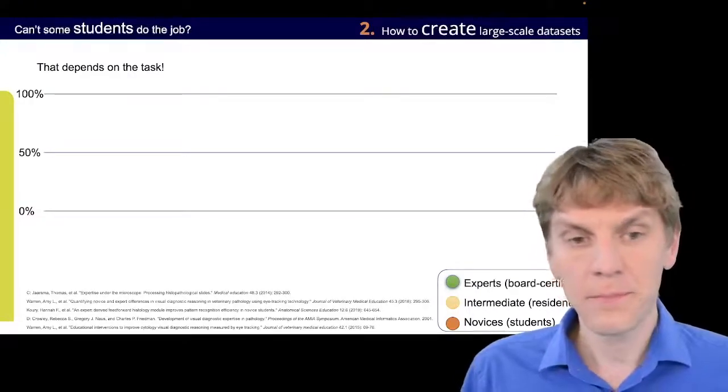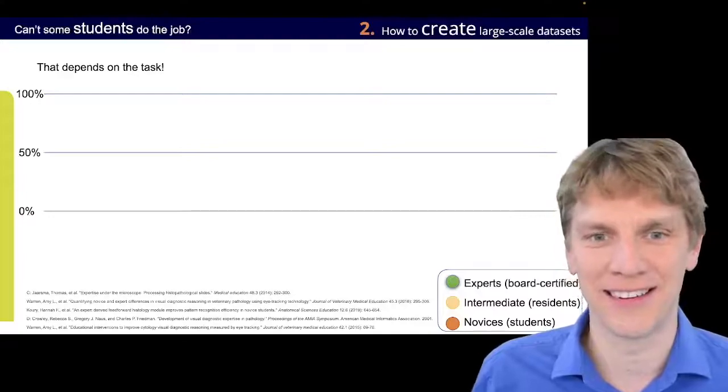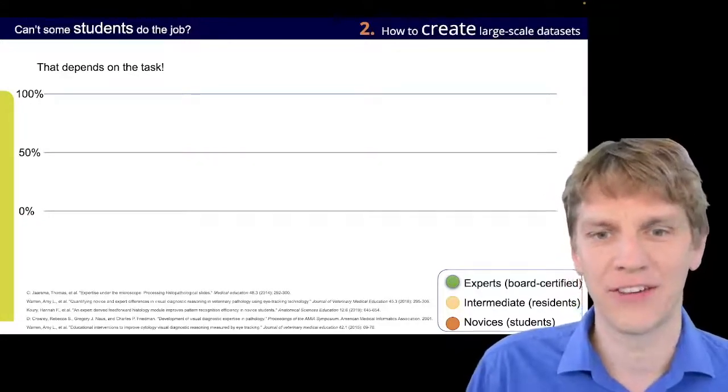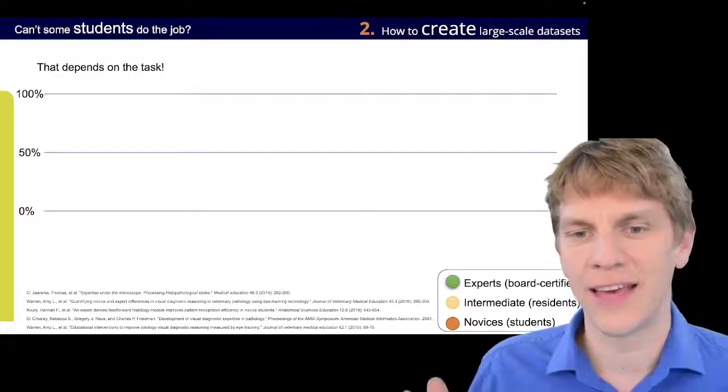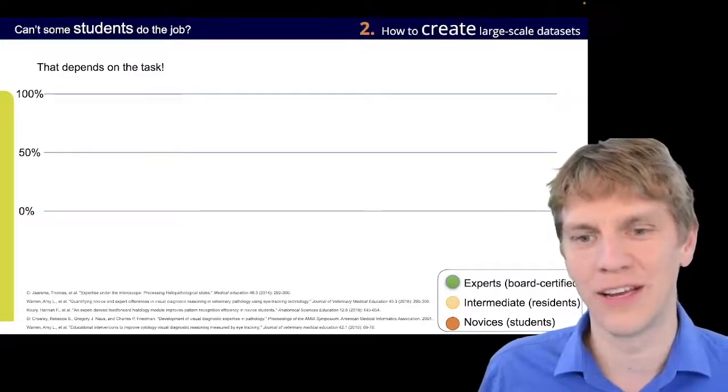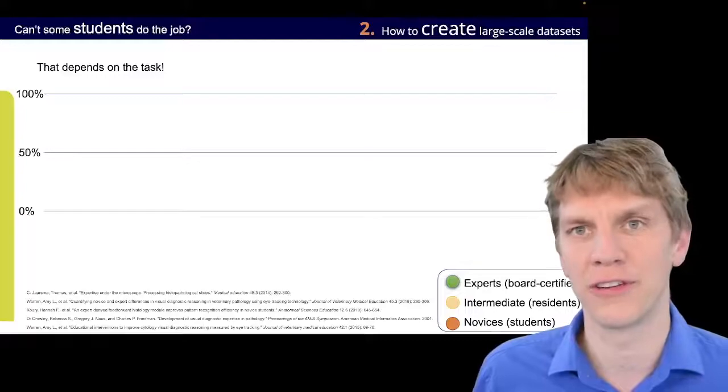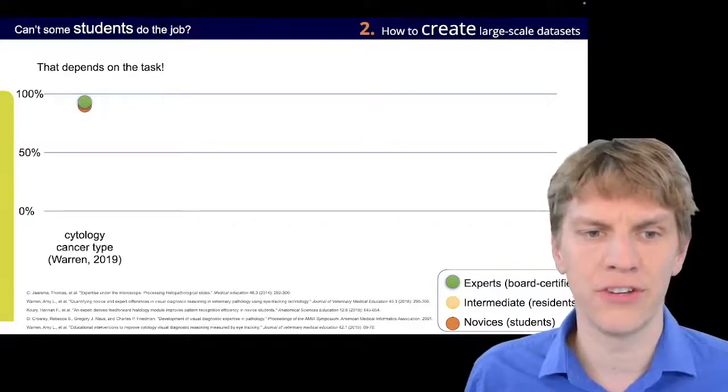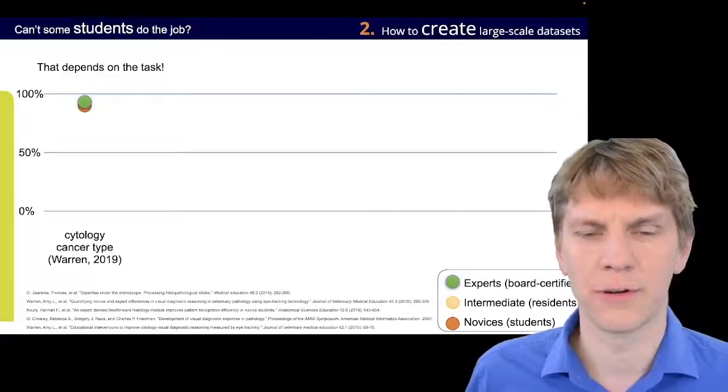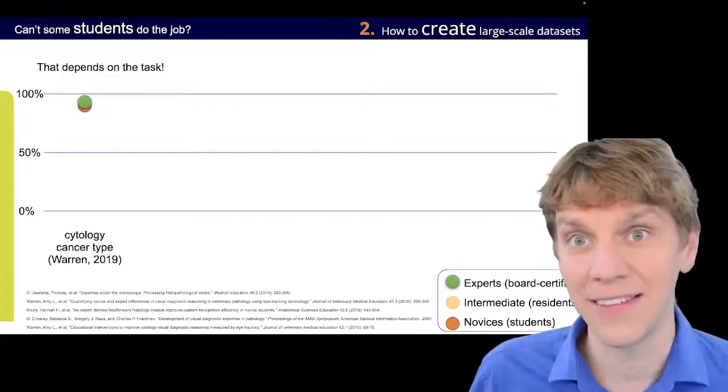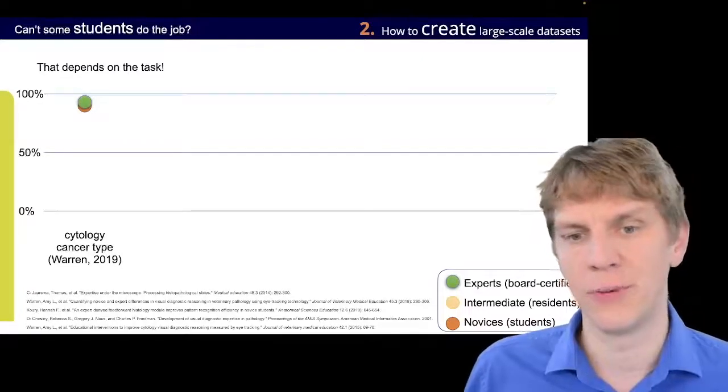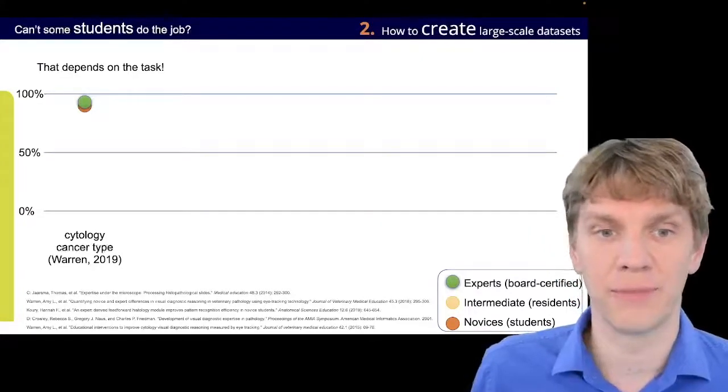So, I dug into the literature for that a little bit and found comparisons of expert annotations, novice annotations, so student annotations, and intermediate, which were usually residents. And we found that, for example, for cytology cancer type, there was a study by Warren and colleagues in 2019, which showed that actually there was little difference between novices and experts.